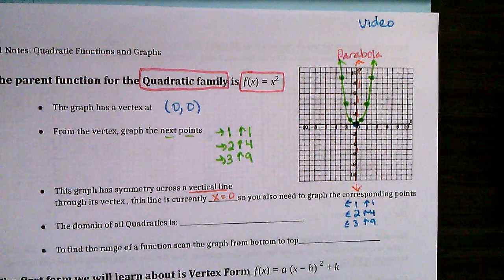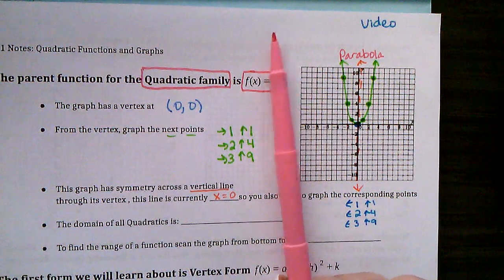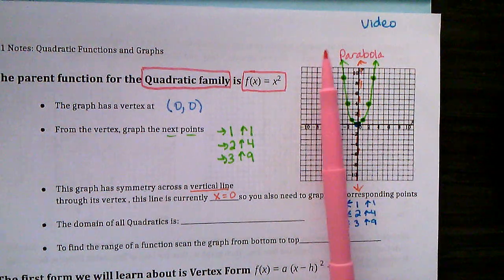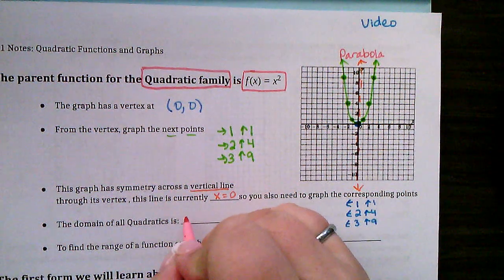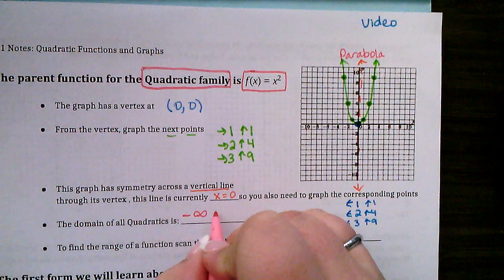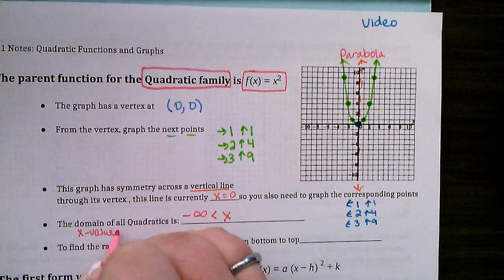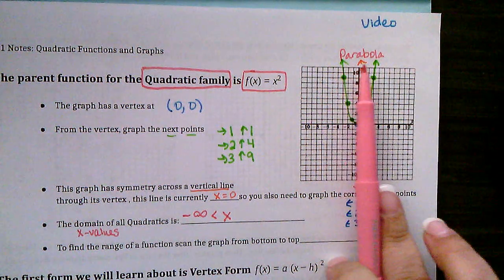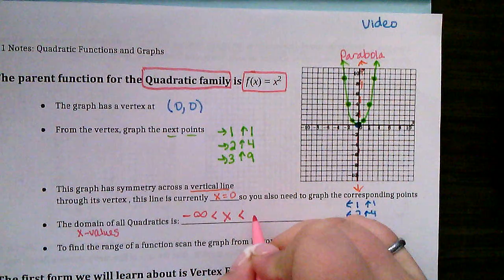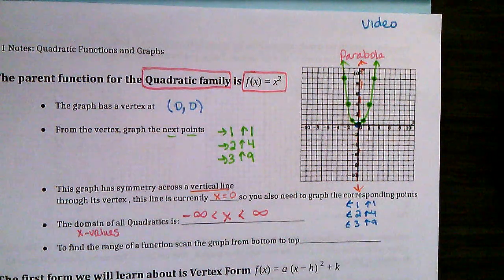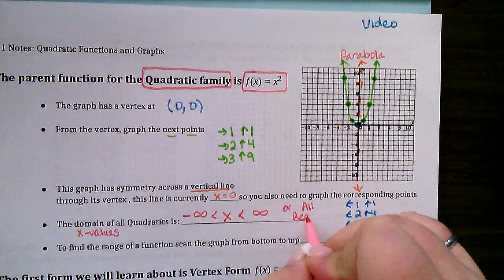The domain: if I take my pen and move it from the left side, the first thing I hit is an arrow, so that means it goes forever — negative infinity. And if I move my pen to the right, the last thing I hit is an arrow up here, so that means it keeps going for all of positive infinity.